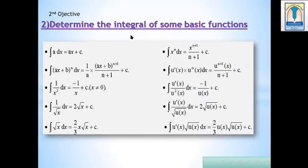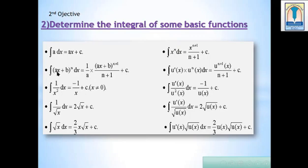Determine the integral of some basic functions. 1. Integral of a dx where a is a real number equals ax plus c. 2. Integral of (ax + b)^n dx equals 1 over a times (ax + b)^(n+1) over (n+1) plus c, where a is the coefficient of x. Integral of 1 over x squared equals minus 1 over x plus c, with x different from 0. Integral of 1 over radical x dx equals 2 radical x plus c. Integral of radical x dx equals 2 over 3 times x radical x plus c.